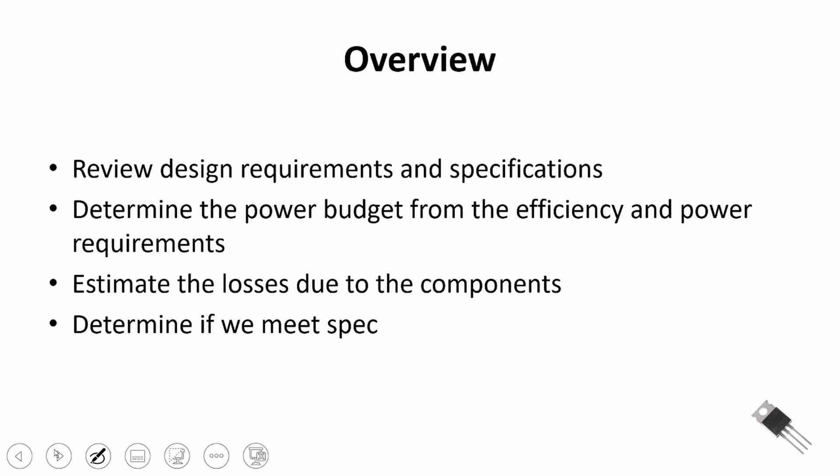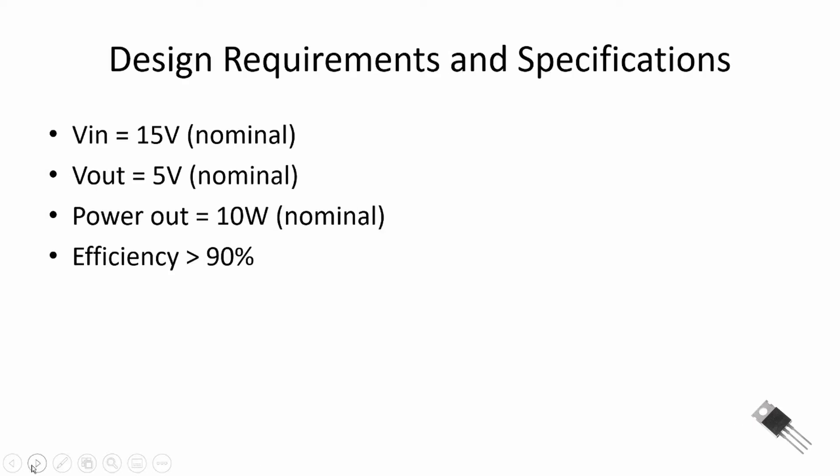Here's an overview of this video. We're going to review the design requirements and specifications from the first part, then we're going to determine a power budget based off the efficiency and the power requirements for the design. Next step, we're going to look at the losses due to the components - specifically the losses in the inductor, the losses in the diode, and the losses in the MOSFET. We will ignore the losses in the capacitor for this first run through on our design. Then we're going to determine if we meet spec on our design.